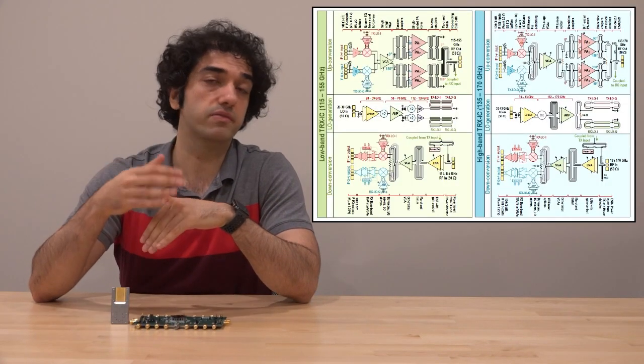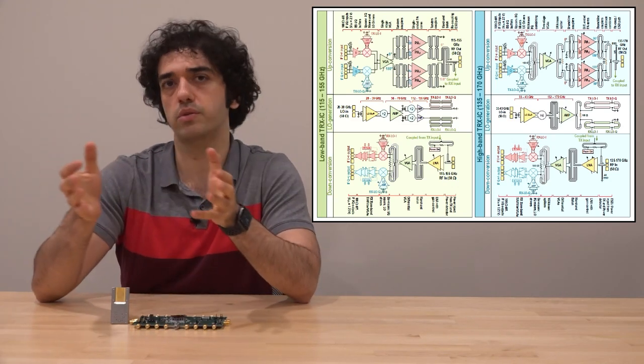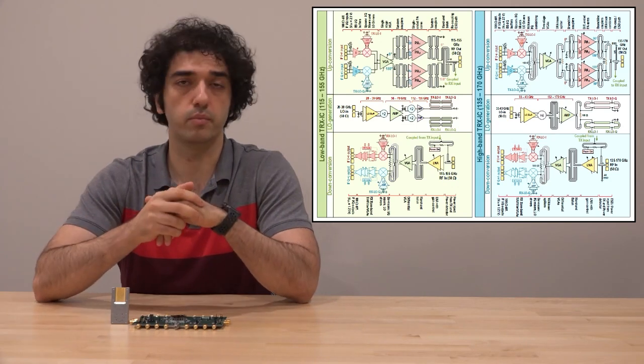So how do we do this? Well, the very first step is, of course, to make some RFICs. And we've gone ahead and we created two chipsets that operate between 115 all the way to 170 GHz. And we've divided this frequency into two in order to maintain performance across the full band.